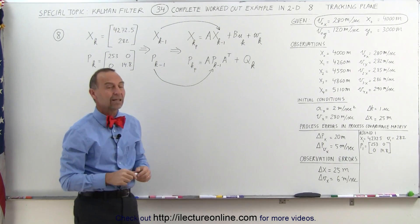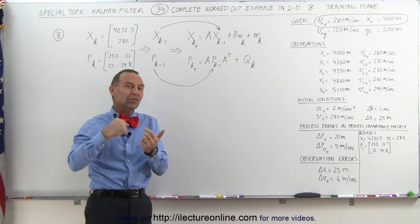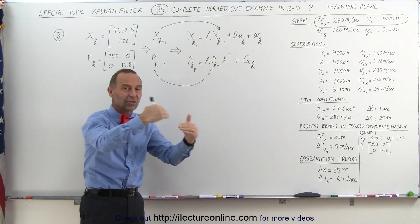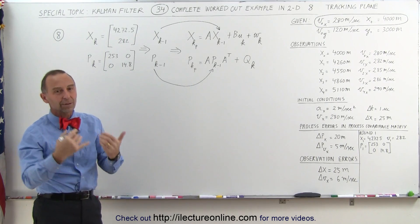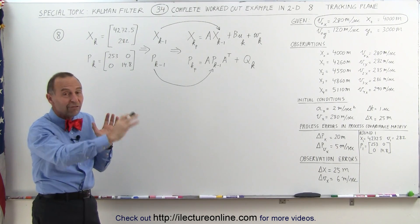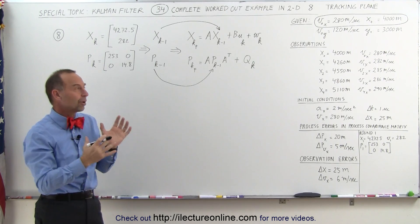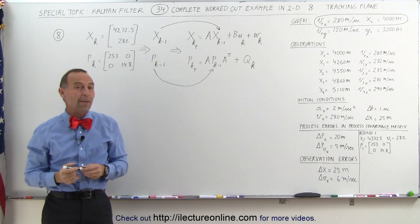In this case, we're tracking an airplane. So now let's go ahead and start round two. Now we'll do round three. You can see how this continues to progress through the calculations. We'll start doing it a little bit faster and faster so you can really follow and see how the Kalman filter process works in this 2D example.